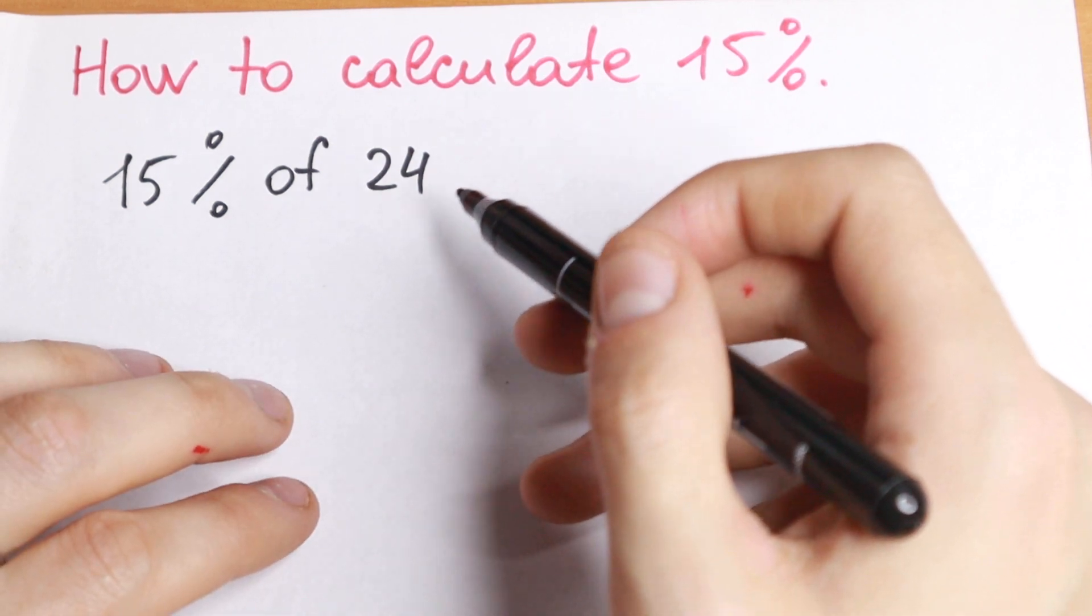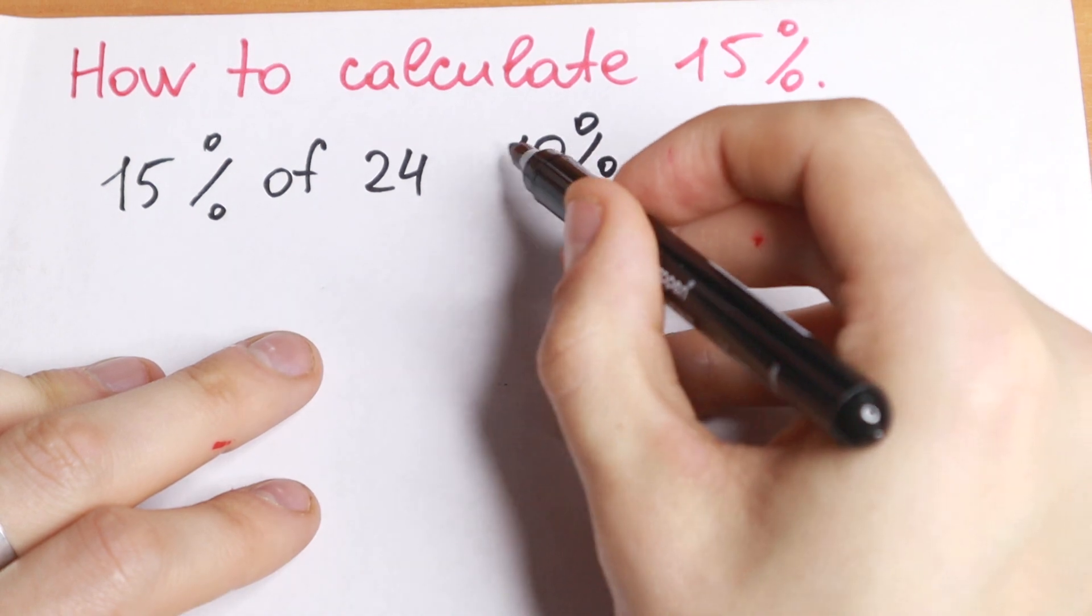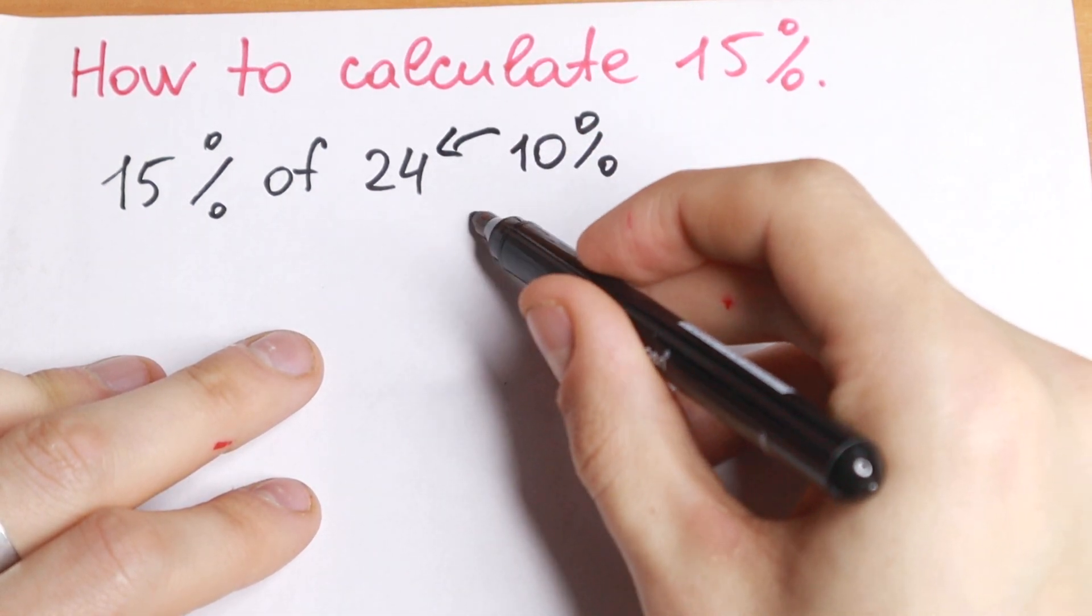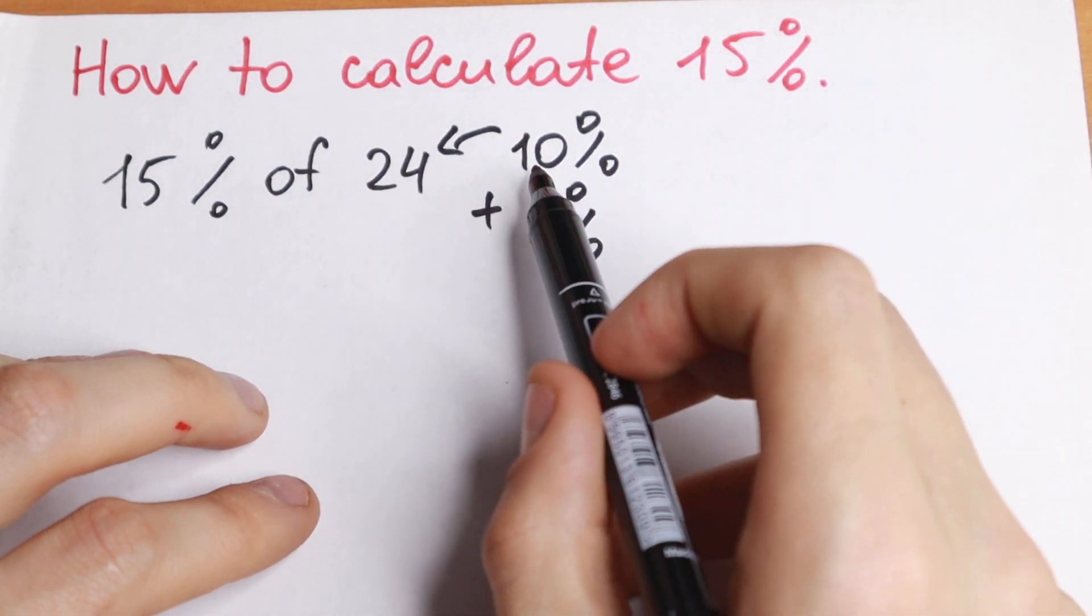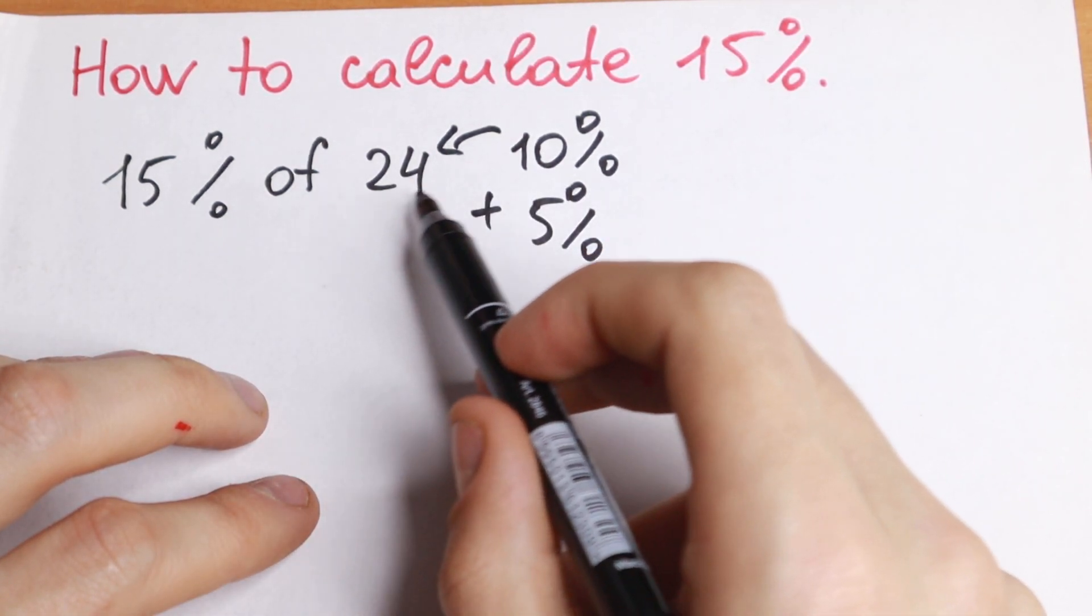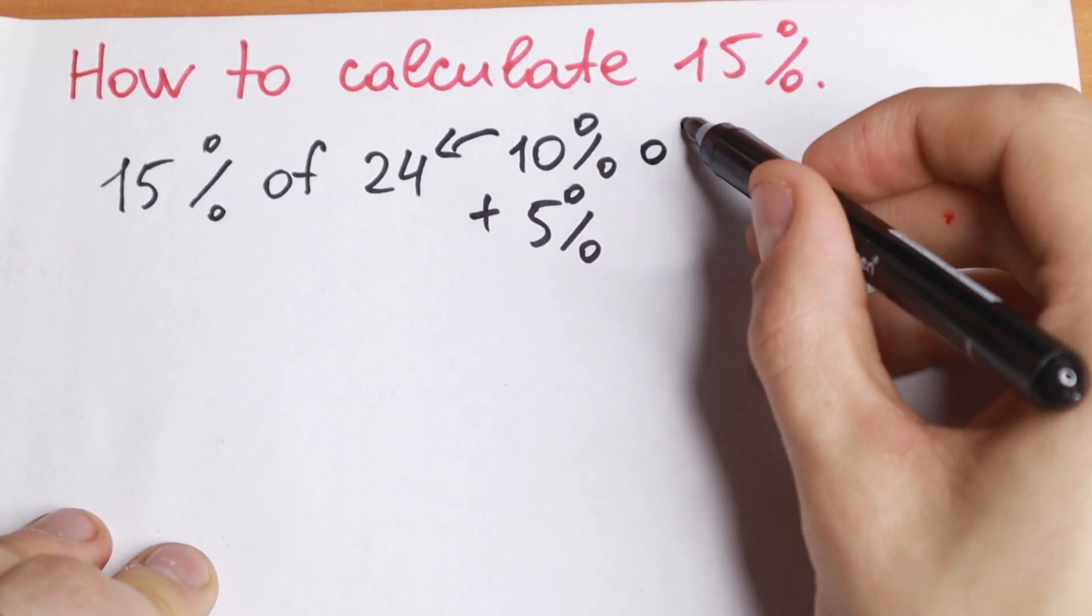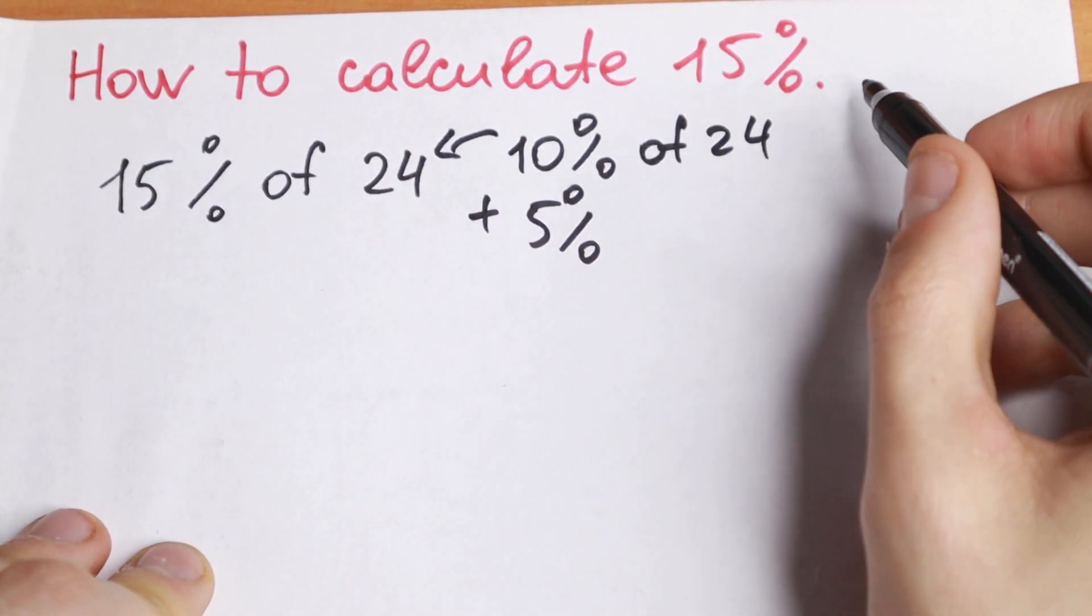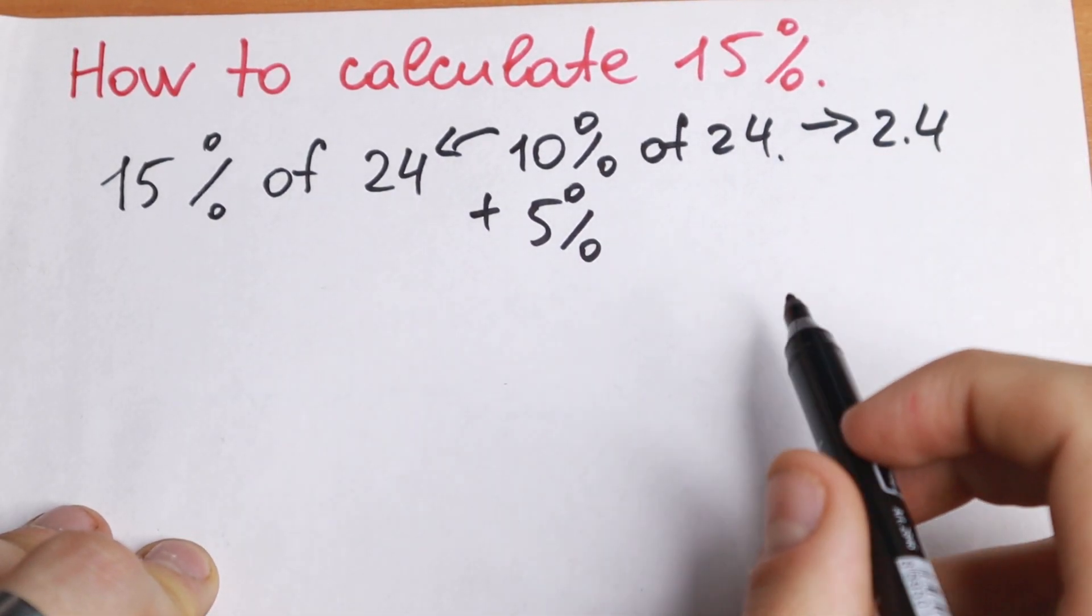So the best trick to solve it is to find at first 10% of this 24, and we need to add 5% of this 24. So as you can see, 10% of this 24, we just divide this by 10. So right here, 10% of 24, we will have 2.4 because we divide it by 10.